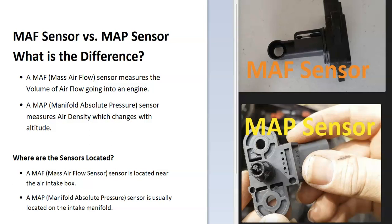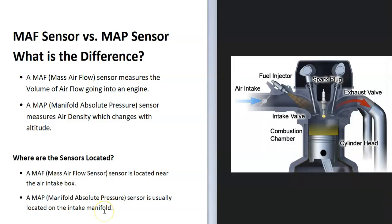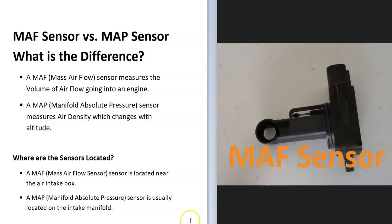I thought I'd make a quick video on what the difference is between a mass airflow sensor and a manifold absolute pressure sensor and what they do. Both of these sensors are very similar in that they affect the air-fuel ratio mixture going into the engine, since the onboard computer uses both of these sensors to adjust the air-fuel ratio mixture going into the cylinder so that the engine can run properly.